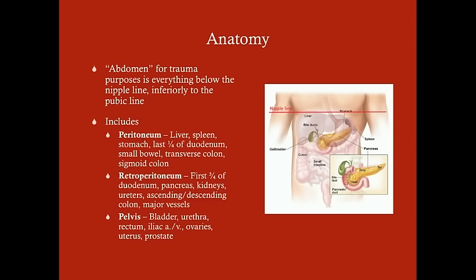For trauma purposes, the abdomen is considered anything below the nipple line all the way down to the pubic line. The reason is that you have abdominal viscera that go up past the inferior margin of your costocartilages. A lot of people think the abdomen is below the costocartilages, but you have abdominal viscera — especially the liver and spleen, two of the most commonly injured organs — that go above that margin.